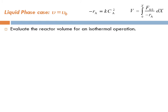Let's evaluate the reactor volume for an isothermal operation. The first thing we need to do is write the design equation. The second thing is to write the rate law. The third thing is to utilize the stoichiometry. Let's write the stoichiometry: CA equals FA divided by volumetric flow rate ε.